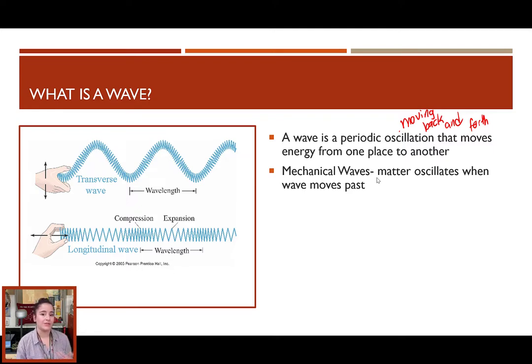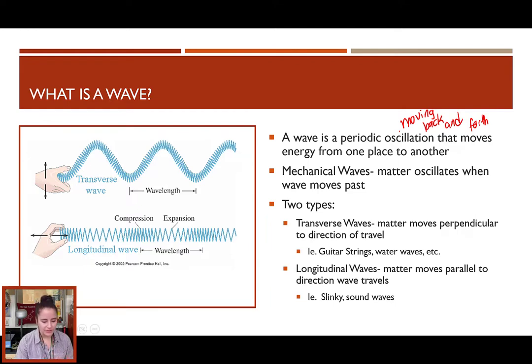Mechanical waves are any wave where the actual matter itself is oscillating or vibrating back and forth as that wave goes through. For these two waves, both of the waves are traveling in this direction. For the transverse wave, if you were to focus in on this part of the slinky, this part of the slinky would just be moving up and down right in that area. The matter moves perpendicular to that wave direction, where in a longitudinal wave, if we were to focus on this part of the slinky, as that wave moves through, it would seem to be moving that way, parallel to the direction of the wave.